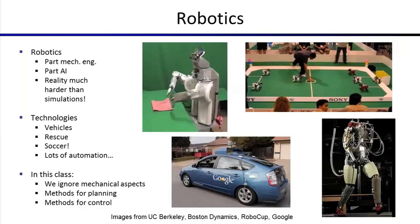It turns out that simulating robots is much easier than actually deploying robots. Once you're in the real world, it's not just planning how you move that arm — it's acknowledging that maybe your sensors are a little bit wrong, or maybe the arm will slip during motion. Everything is much harder in reality than in simulation. Also, when you mess up, it's more expensive in reality. These robots do not come cheap.